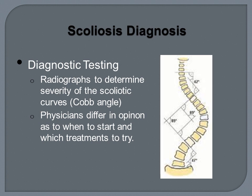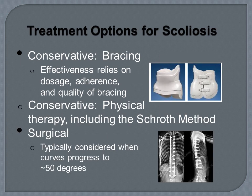Physicians differ in opinion as to when to start treatment and which treatments to try. Treatment options for scoliosis include bracing, physical therapy, and surgery. The effectiveness of bracing relies on dosage, adherence, and quality of the brace. Surgery is typically not considered until a curve progresses to around 50 degrees.